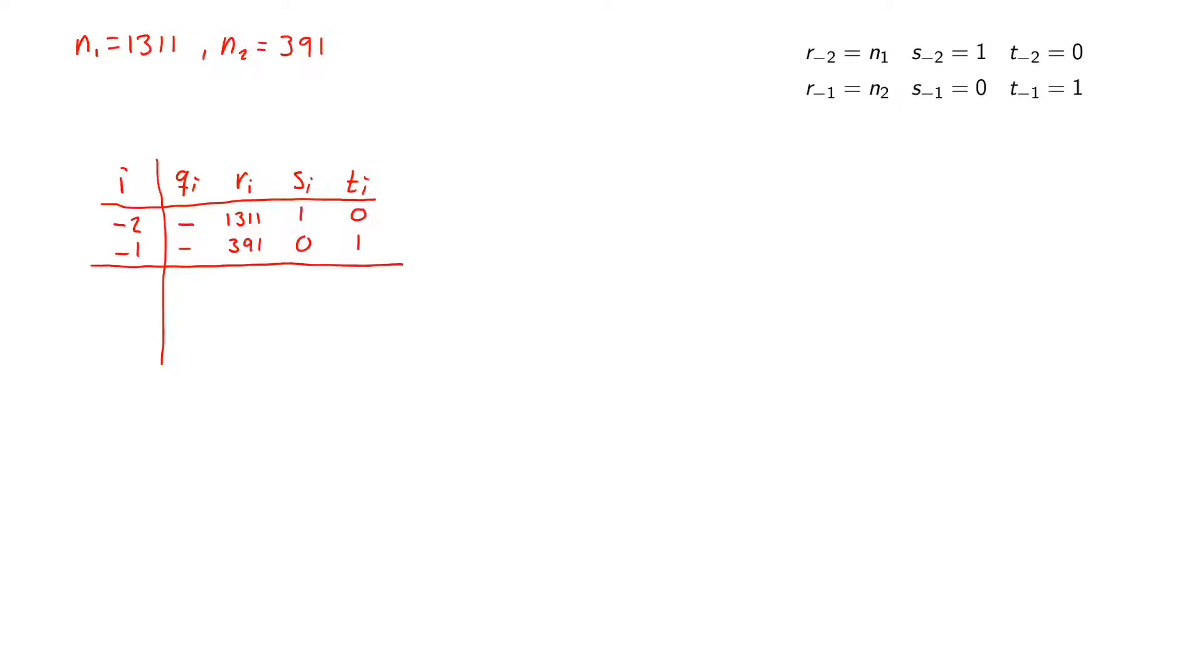So this is the initialization of our algorithm, and now we can move on to filling out this table. So now we fill this table out by using the expressions that we have here as we defined them before in our algorithm. So we start by the first row where i equals 0. So q_i here, q_0 will be equal to 1311 divided by 391, and then we round this down. So this will be equal to 3. So here we write a 3.